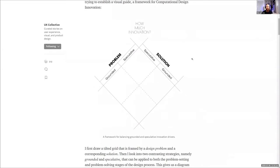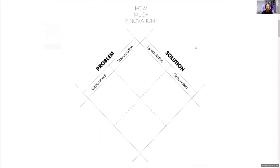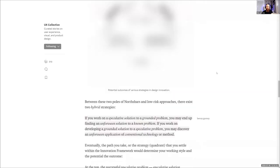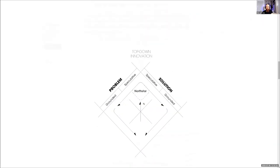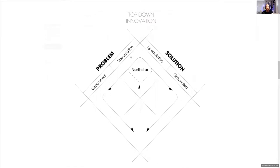I was trying to figure out how much innovation we can deal with. We always have some grounded problems — for example, we need more floor square footage. That's a very grounded problem solved in a grounded way. But as you move forward, the north star — the crazy design you're trying to get — requires you to be very speculative with both the problem and the solution. That's how you arrive at a pretty amazing design.